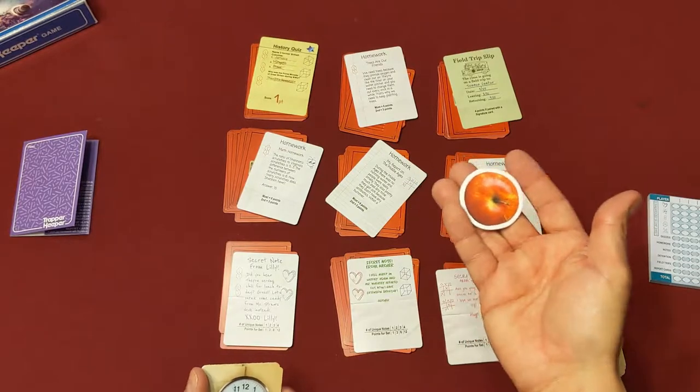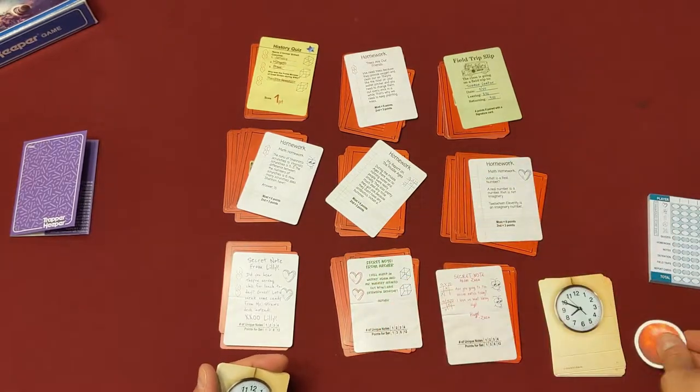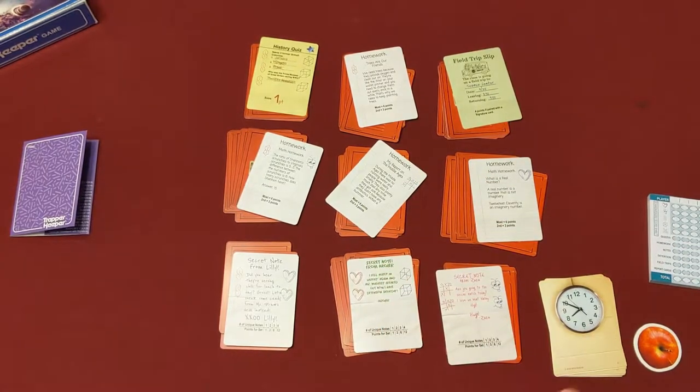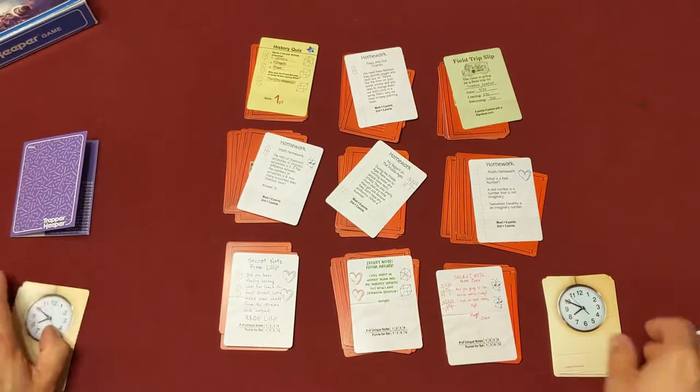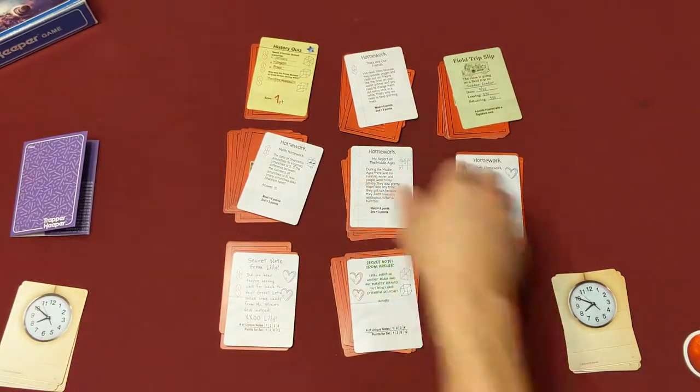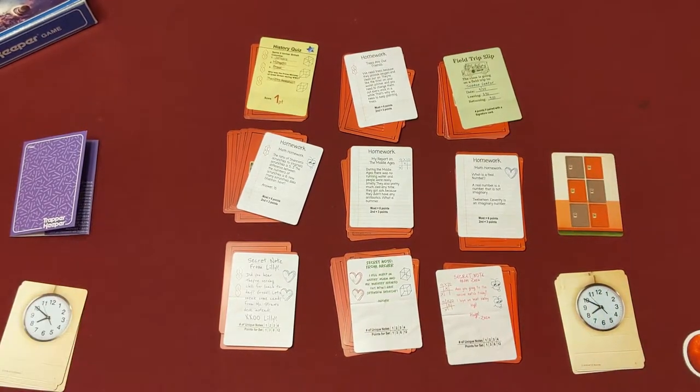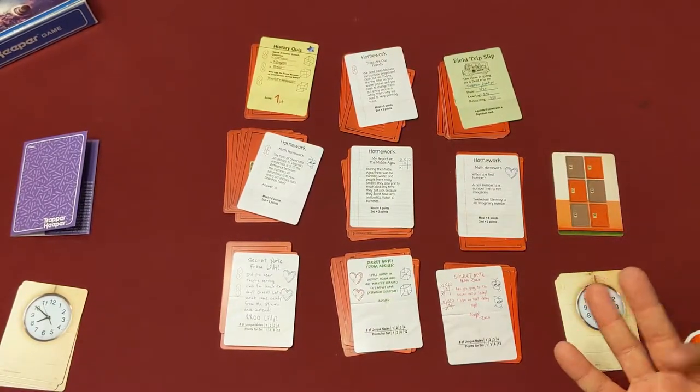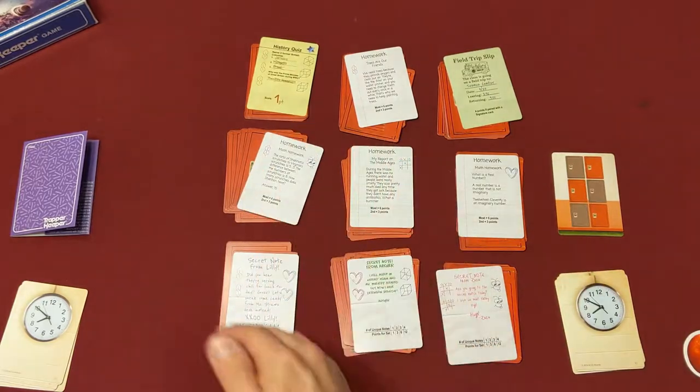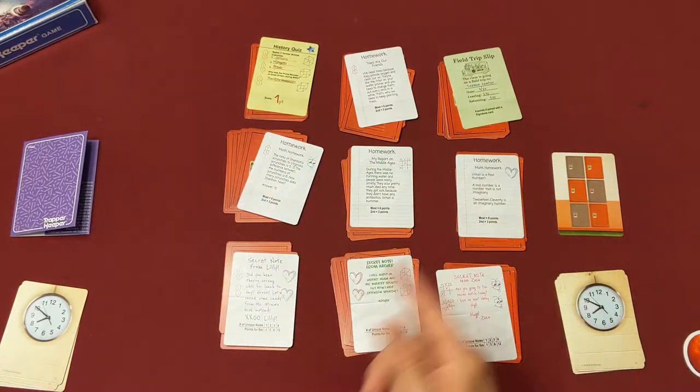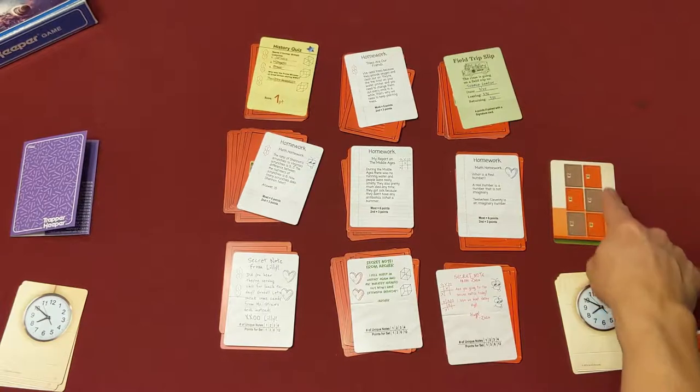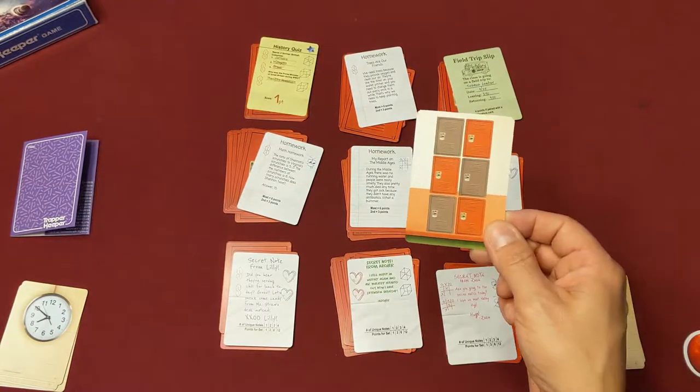This little apple here is your first player marker or teacher's pet. So whoever has that is going to be the person turning over these cards from the time deck here. You're going to turn over the top card of this time deck, and that's when the first round has begun. You have three choices on your turn: you can take a row, or you can take a column of cards, or you can take cards that are in the orientation that's shown on this card here.